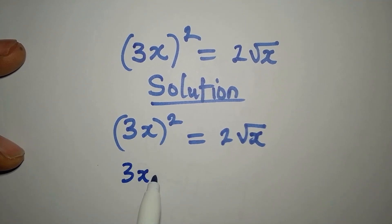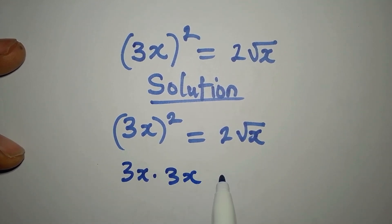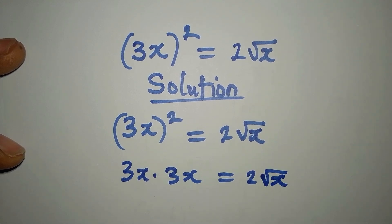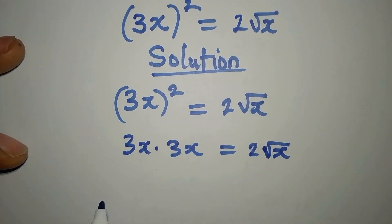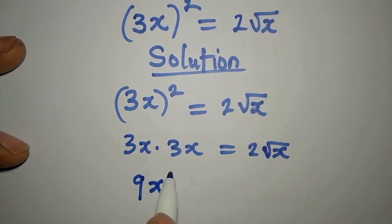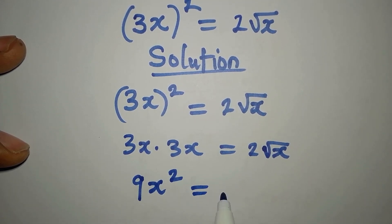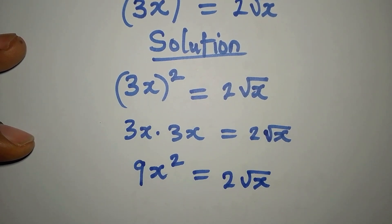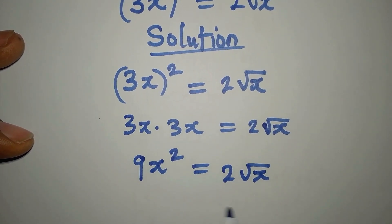As 3x multiplied by 3x, then we have 2√x. If you multiply this, you're going to have 9x² and that is equal to 2√x. Now from here, remember that we are still having x in two places.